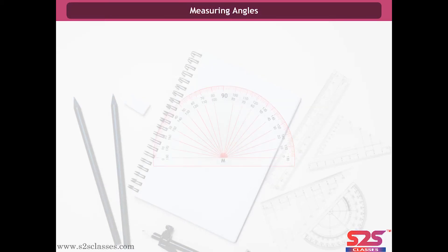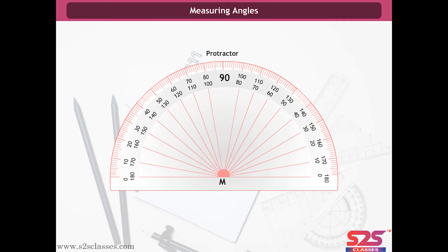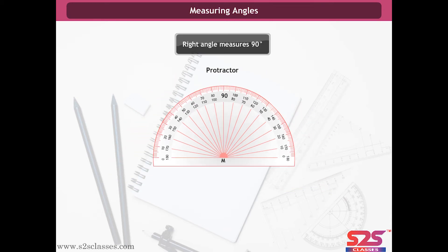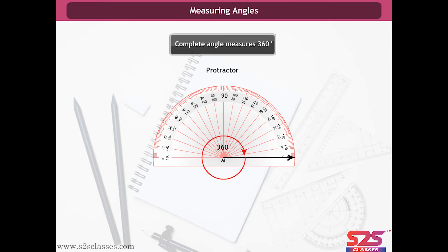Measuring angles. In the above frames, we learnt to compare angles using a right angle tester. To be more precise in comparison, we need to measure the angles. The instrument used to measure an angle is called a protractor. Angles are measured in degrees. The number of degrees tells how wide open the angle is. Degrees are marked by a degree symbol. There are 360 degrees in one complete angle. A right angle measures 90 degrees, a straight angle measures 180 degrees, and a complete angle is 360 degrees.